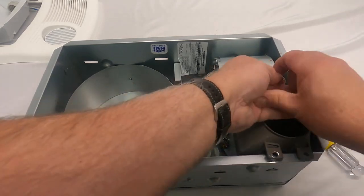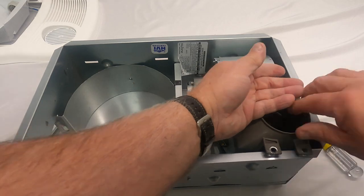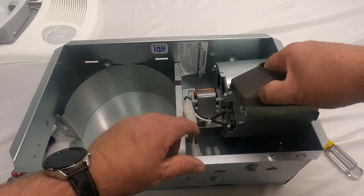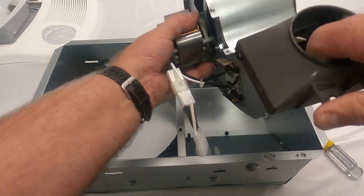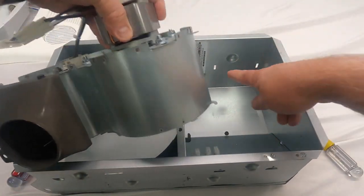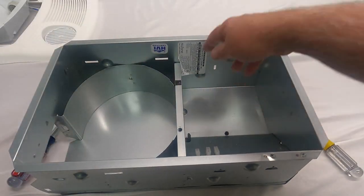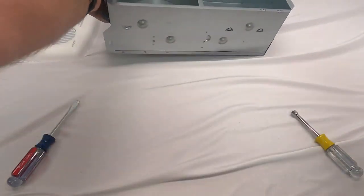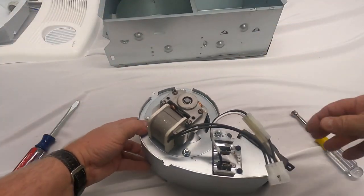Once those screws are out, you got to be careful because this can come down if it's mounted up in the ceiling. What you're going to do is remove that heater assembly. There are hooks and those two hooks hook into the housing there. And then you'd actually have the whole heater assembly in your hands.